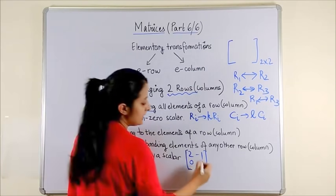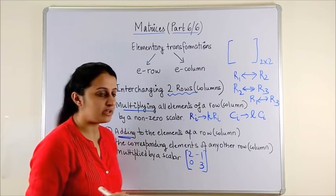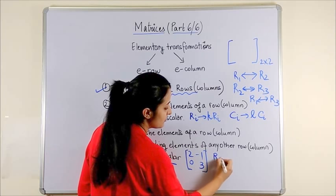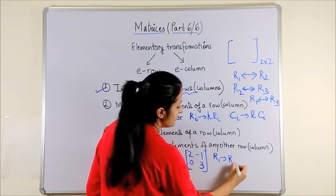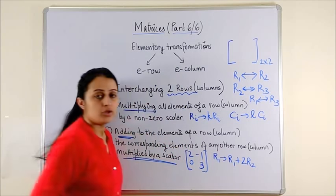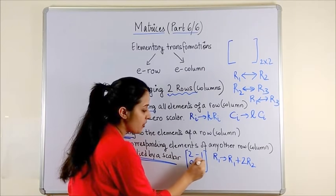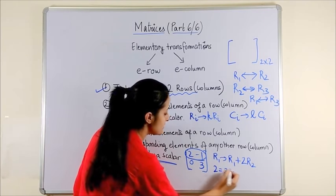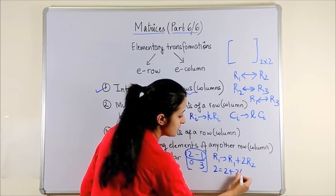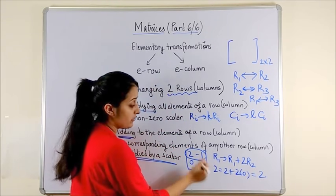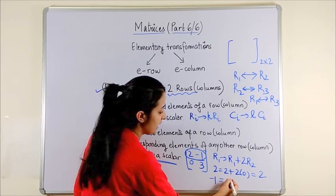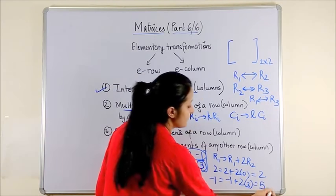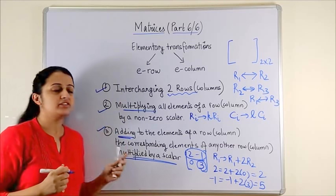This third operation appears a bit confusing. Let's take an example of a 2x2 matrix. We can write row 1 as row 1 plus twice of row 2. So the elements of the first row transform: 2 becomes 2 plus twice of 0, so 2 stays 2. For minus 1, we have minus 1 plus twice of 3, which makes it 5. Please have a glance at all three properties once again.